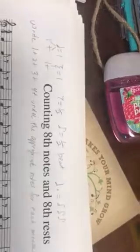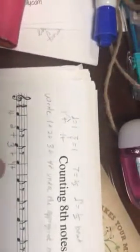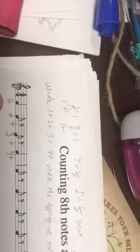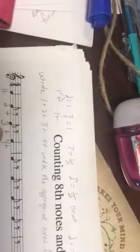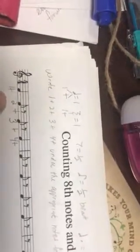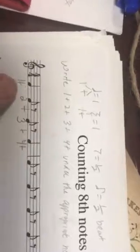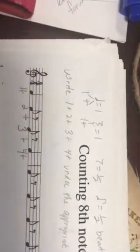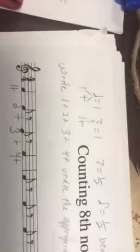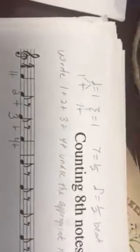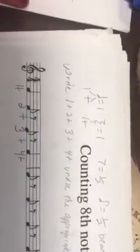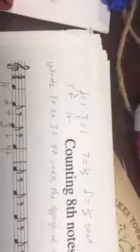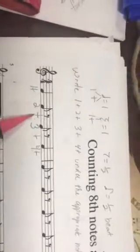Moving on to the first measure, we're going to write one and two and three and four and, but we have to write them under the right notes. Let's start with our first beat. We have one and on the quarter note because it has two parts to it. We move on to the second beat which is our eighth note and eighth rest.